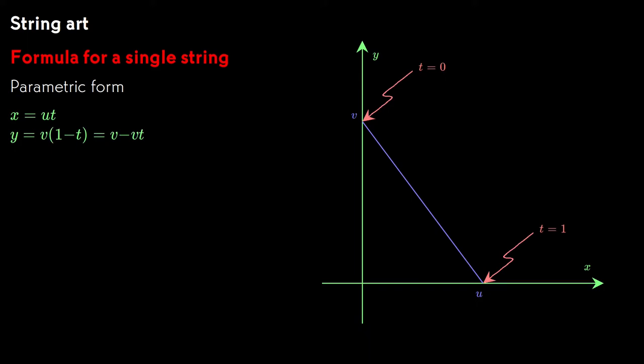And y falls linearly from v at t equals 0 to 0 at t equals 1, so y equals v times the quantity 1 minus t.